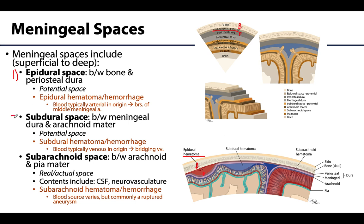Next we have the subdural space, which is located between the dura — specifically the meningeal dura — and the arachnoid mater, seen here in a yellow color. This is another potential space that can become an actual space where escaped blood, typically venous in origin, will separate these layers that are normally adhered. This is what occurs in a subdural — sometimes referred to as a dural border — hemorrhage or hematoma.